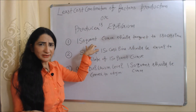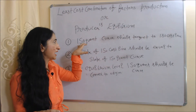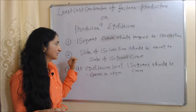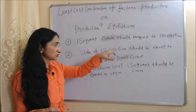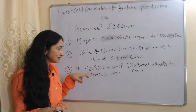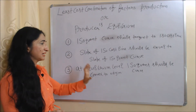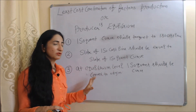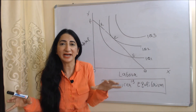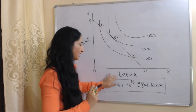The second condition is that at the equilibrium level, the slope of the iso cost line should be equal to the slope of the isoquant curve. The third condition is that at the equilibrium level, the isoquant should be convex to the origin.